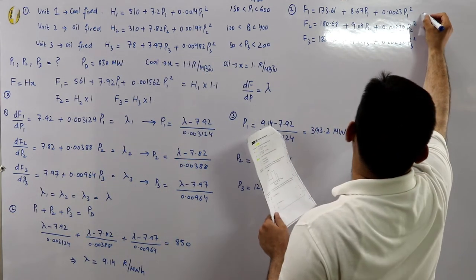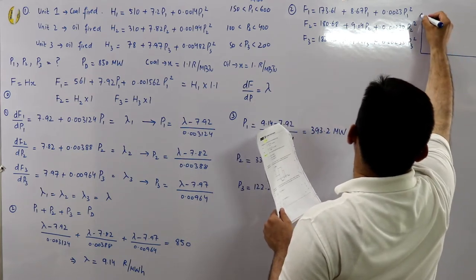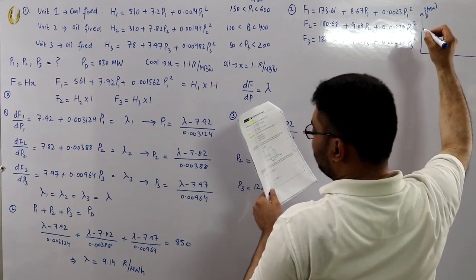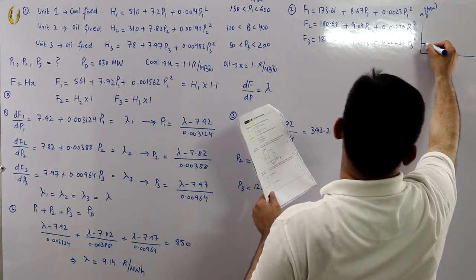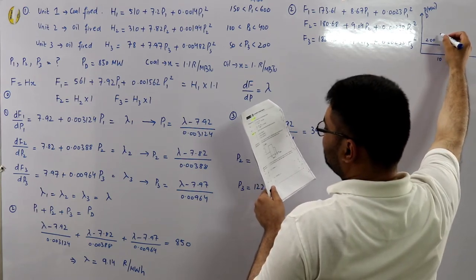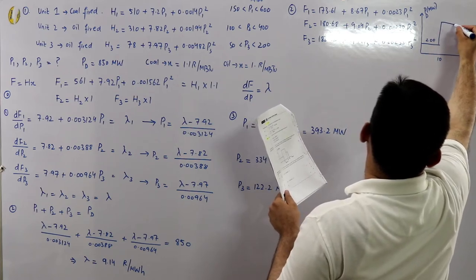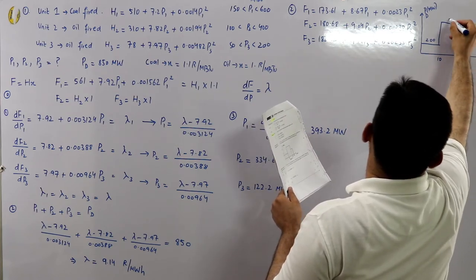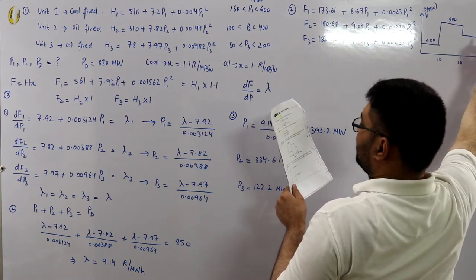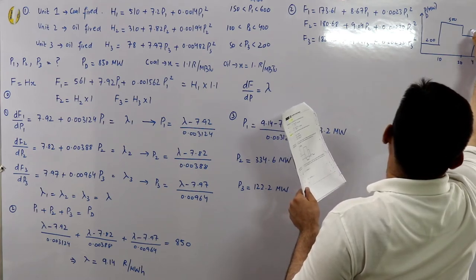The load demand is given as a load curve. The power demand over time is: 200 MW for 10 hours (interval A), then 500 MW for the next 10 hours (interval B), then 300 MW for the next 4 hours (interval C).